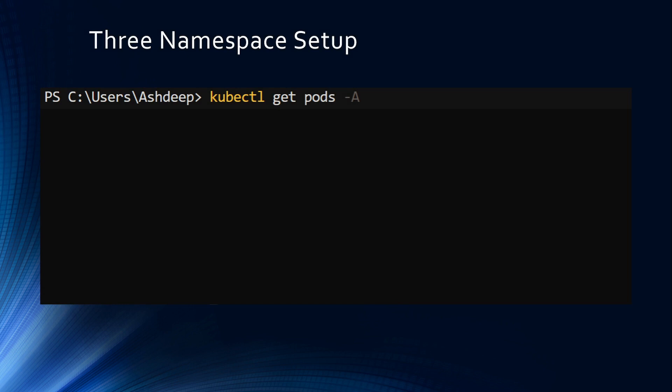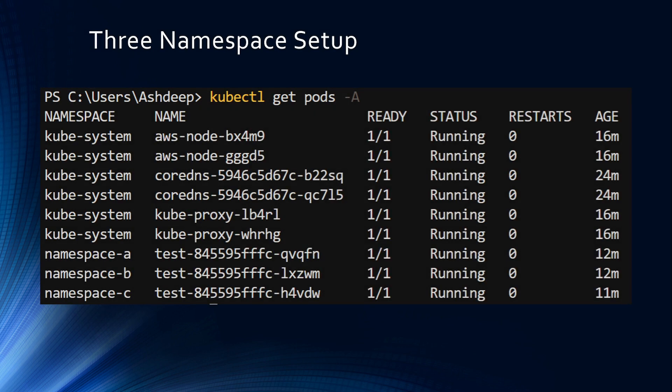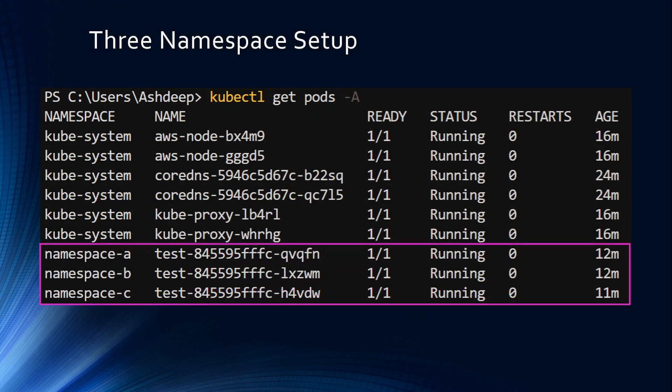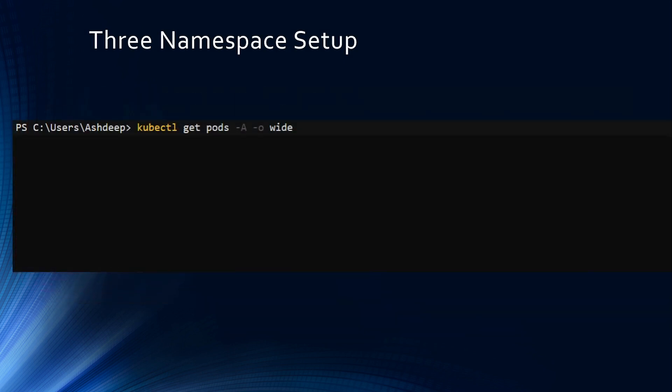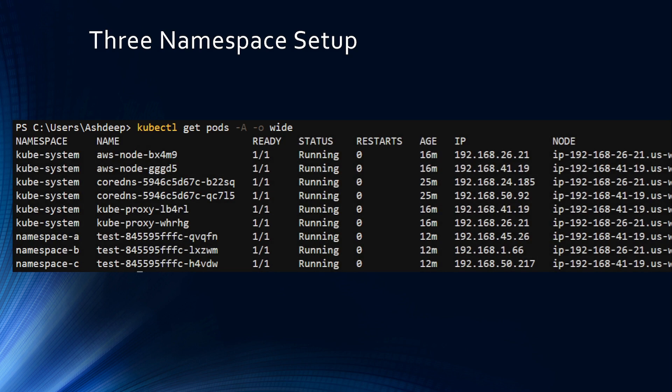I have an EKS cluster running. If I run kubectl get pods -A, which shows all the pods running in my cluster, you can see there are three namespaces — namespace A, namespace B, and namespace C — that I created outside of the default namespaces, with one pod running in each. Running kubectl get pods -A -o wide shows us the IP address of each pod.